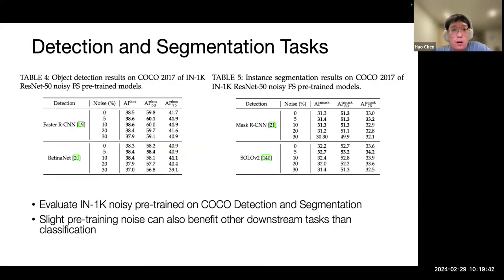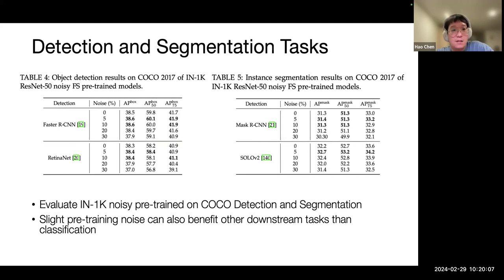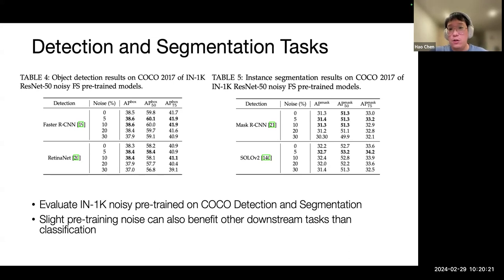We also validate these observations on detection and segmentation tasks. Using the ImageNet-1K noisy pre-trained ResNet-50 on COCO detection and segmentation, with methods including Faster RCNN, RetinaNet, Mask RCNN, and SOLO V2, we found that 5% pre-training noise also benefits downstream detection and segmentation performance, while 10% noise achieves comparable performance to the clean pre-trained model.